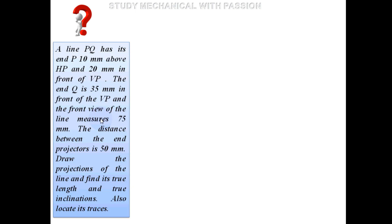The first problem: A line PQ has its end P 10mm above HP and 20mm in front of VP. The end Q is 35mm in front of VP and the front view of the line measures 75mm. The distance between the end projectors is 50mm. Draw the projections of the line and find its true length and true inclination. Also locate its traces.